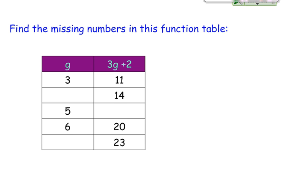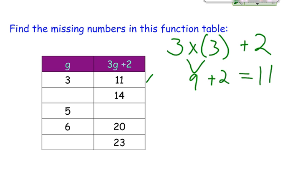If I have g as 3, if I plug it in 3 times the unknown, that's our g, plus 2. So 3 times 3, that equals 9, plus 2 equals 11. That definitely agrees here. So let's figure this out.